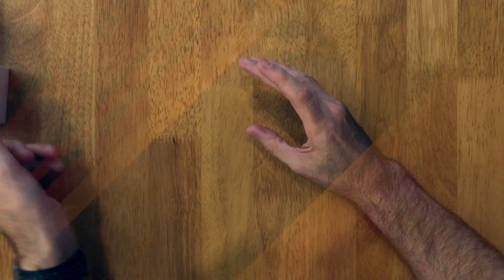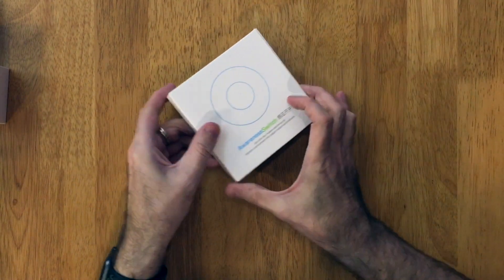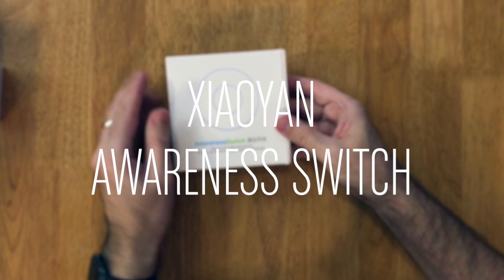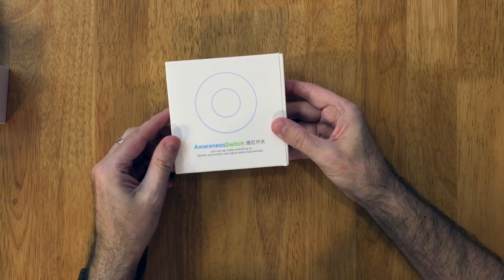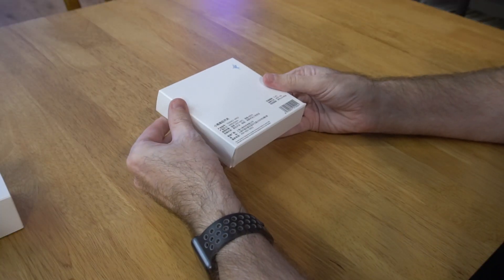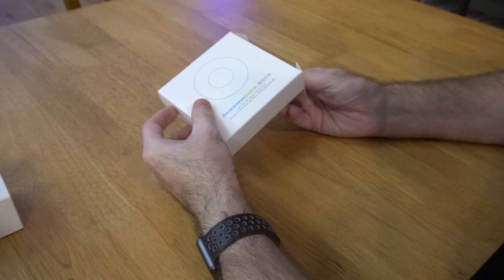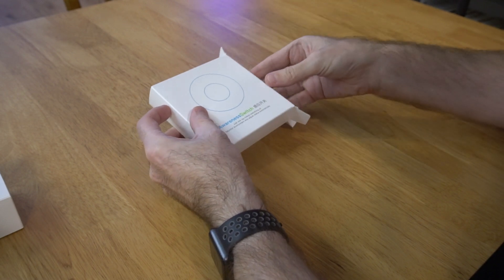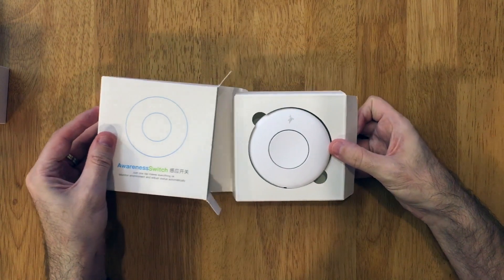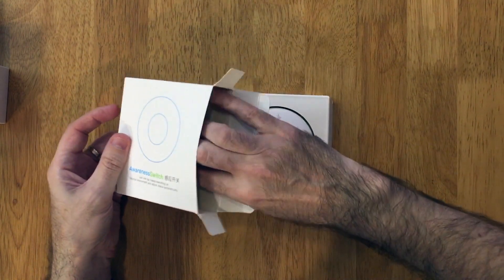Moving on to the fifth and final device, the Xiaoyan awareness switch. This is quite an interesting device because it's a button, it's a motion sensor with two motion sensors on this device, it's also an ambient light sensor, and it's a temperature sensor. All those sensors thrown into one little package.